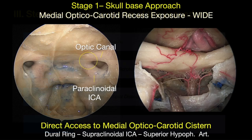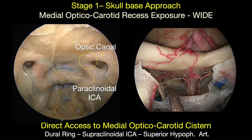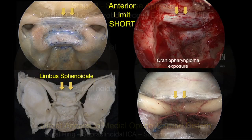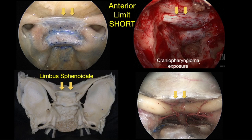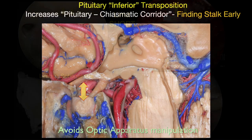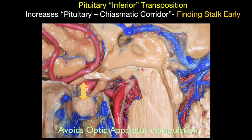On stage one, it's key to perform a wide exposure all the way to the medial optic chiasmatic recess, but not too far — it is short, limited by the limbus of the sphenoid. The exposure includes drilling the floor of the sella to facilitate mobilization of the pituitary gland inferiorly as needed.